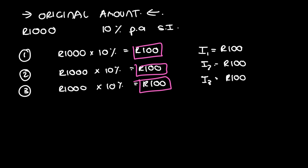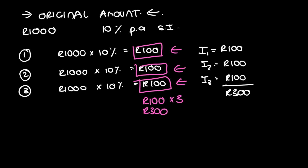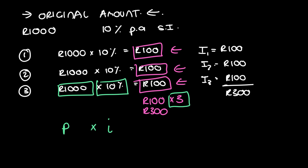If we're working out the total over a three-year period, it would just be that hundred rand times three — so it's whatever the interest is for one year times however many year periods there are. You can double-check by adding a hundred plus a hundred plus a hundred to get 300. This means we have a formula: the total interest is the principal P times the interest i times by however many periods n. That gives you P times i times n.